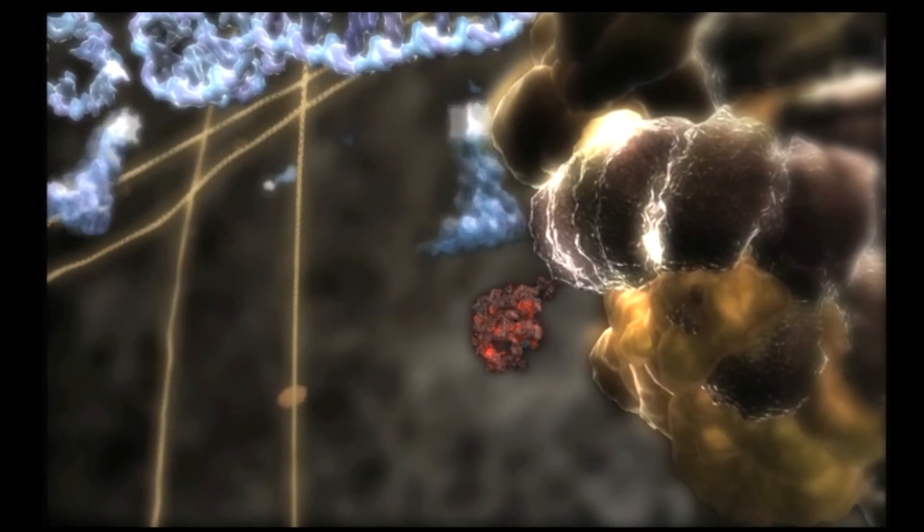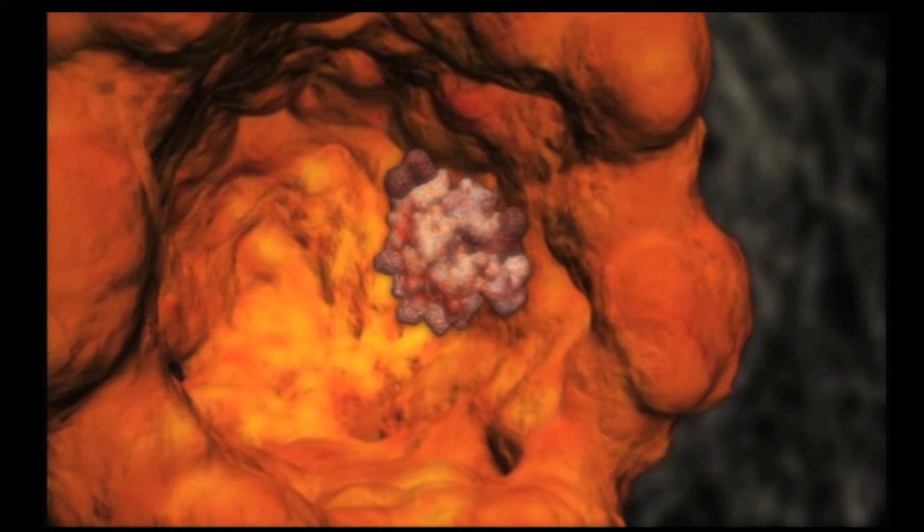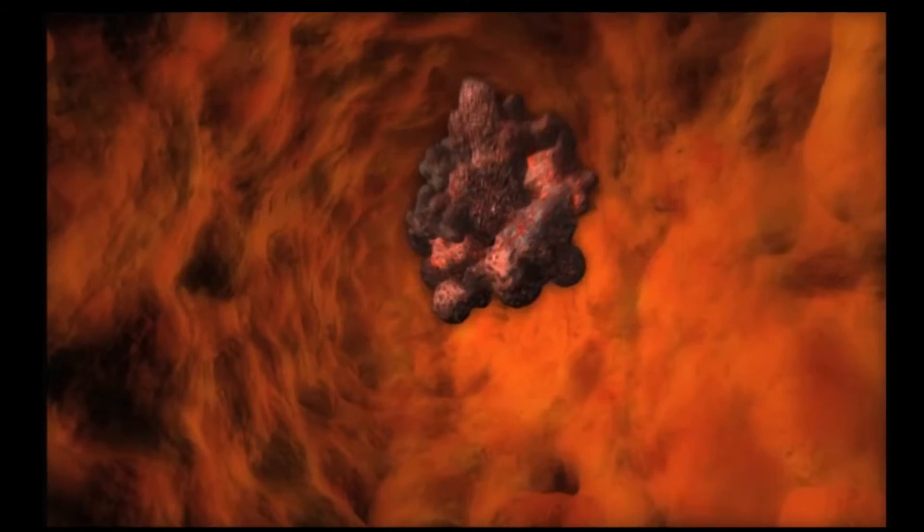When the construction of the chain is complete, it is transported to a barrel shaped machine that helps fold it into the precise shape required to perform its function.